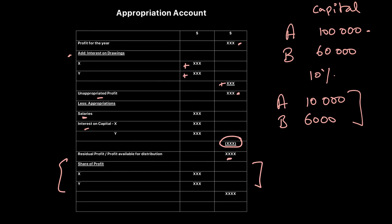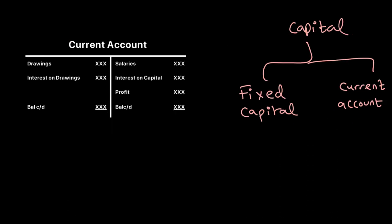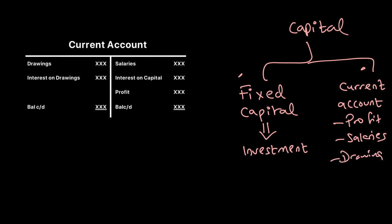Now let's move to the current account. For a partnership, we can divide capital into two parts. The first is the fixed capital account — this records the investments made by the partner, i.e., the amount invested. The second is the current account, where all distributions are recorded: profits, salaries, drawings, etc. All appropriations during the year go in the current account, whereas the investment goes in the fixed capital account.